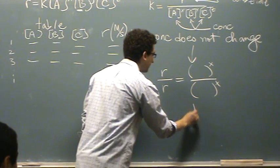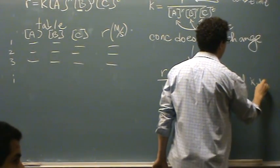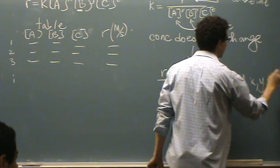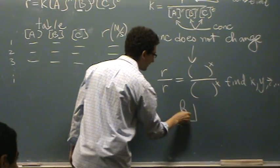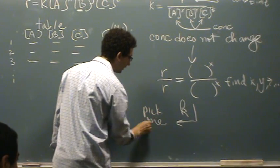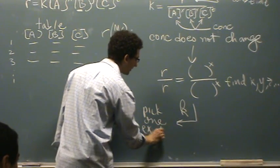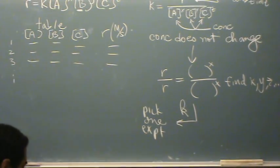Once you do that, so you find X, Y, Z, etc. Once you do that, you find K. And K, you just pick one experiment, whichever one you want, it will be the same answer for each, because K is not going to change over the given reaction. So you just pick one experiment, you plug in all the numbers for it, and K will be your only unknown after you've found X, Y, and Z.